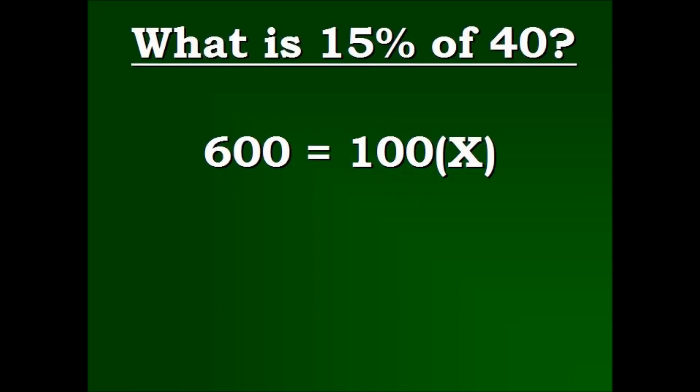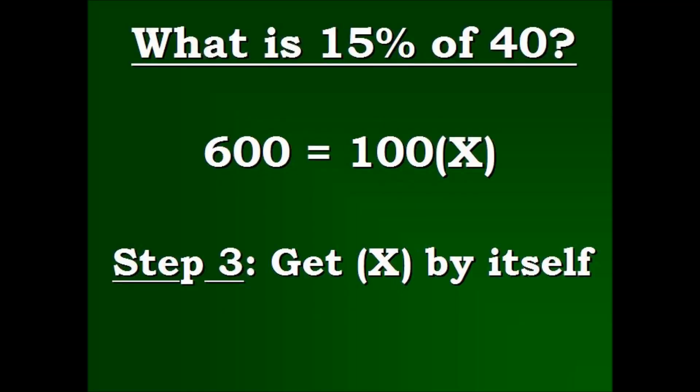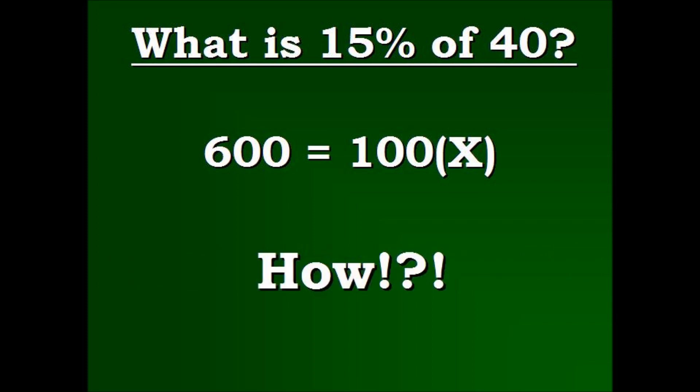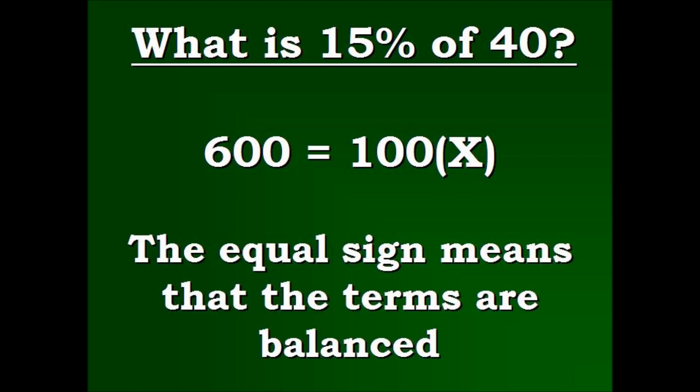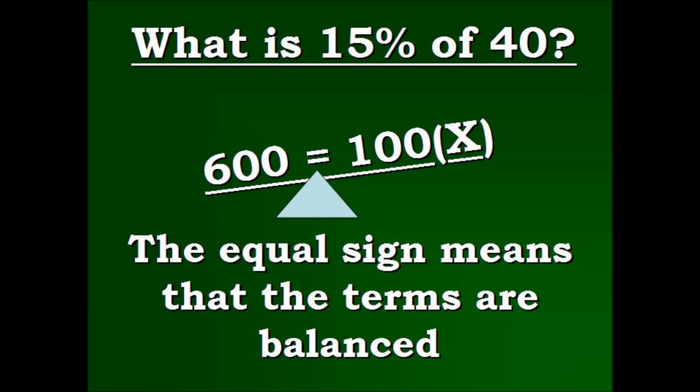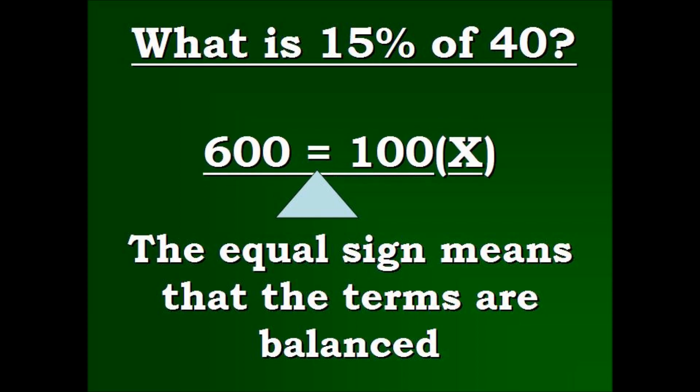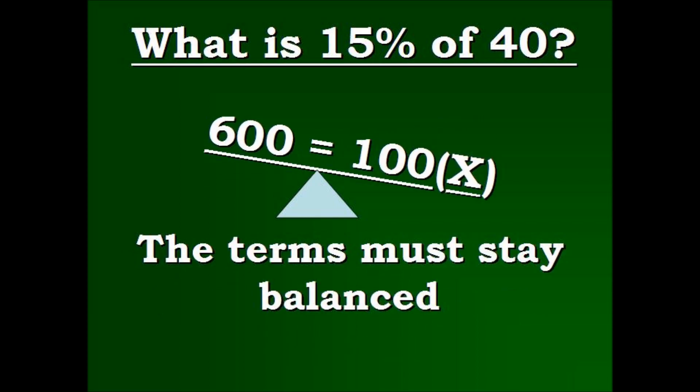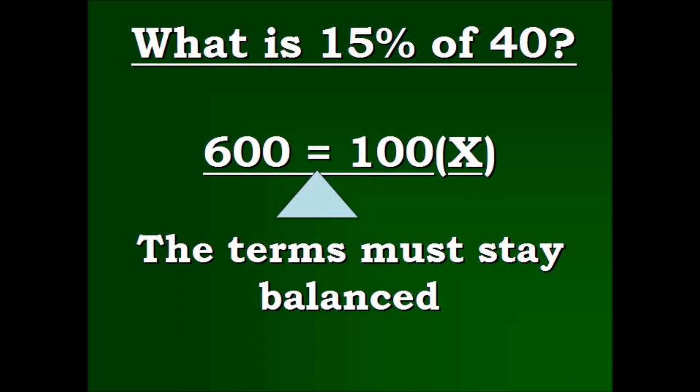Now that we have our new problem that we're going to work from, we have to get x by itself. And you may be asking yourself the question, well, how? What we're going to do is we have to first understand that this is an equation. It must stay balanced. When I say balanced, think of it as being on a scale. And as it teeter totters here, what you do to one side of the equation, you're going to have to do to the other side. The terms must stay balanced.